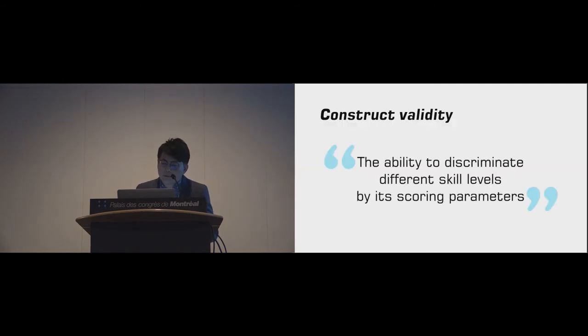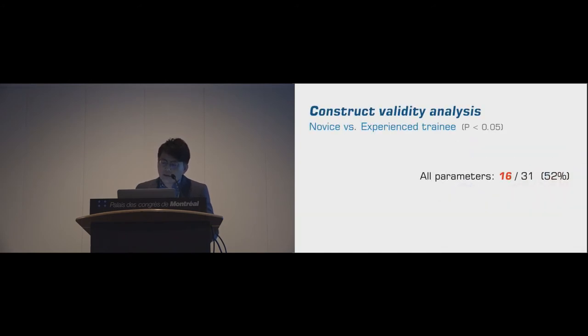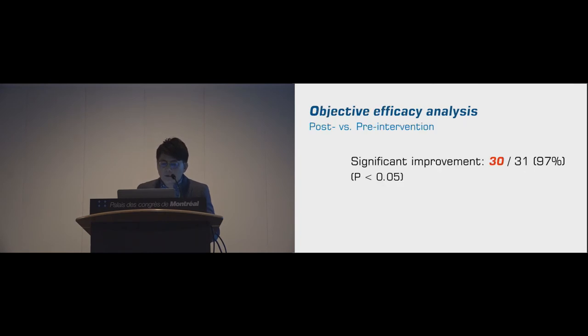Besides the improvement after practice, a good training system must have the ability to discriminate different skill levels by its scoring parameters. Comparing the pre-intervention score of novice and experienced trainees has been a standard method of construct validity. Result. In construct validity analysis, 52% of parameters passed. If the wound-related and anti-tremor parameters are excluded, the pass rate will be increased to 80%. The reason will be discussed later. Participants obtained significant improvements after a one-hour intervention in 97% of parameters. Furthermore, most of them are highly significant.